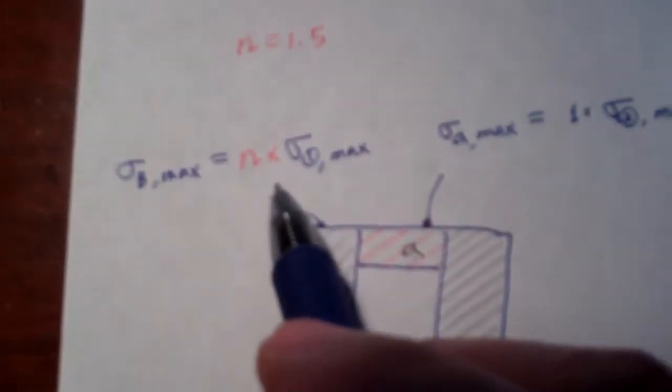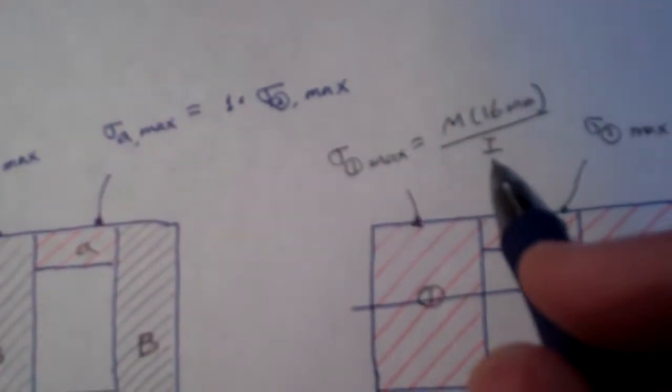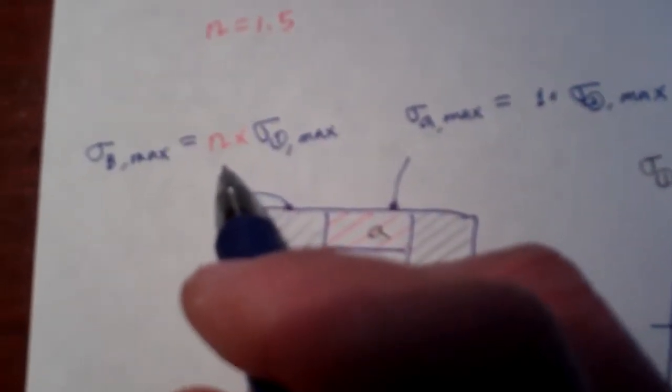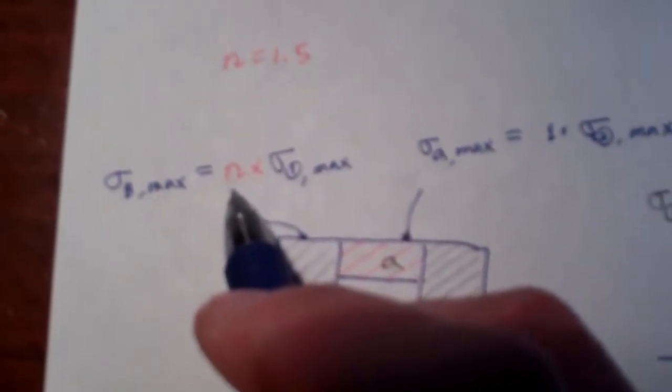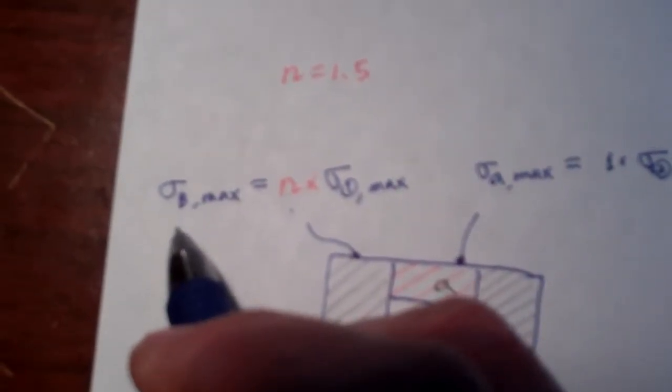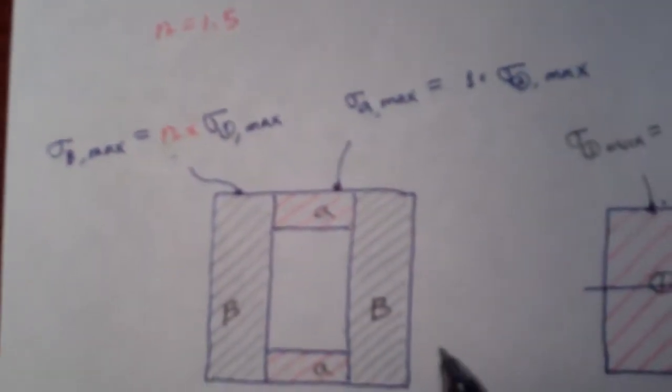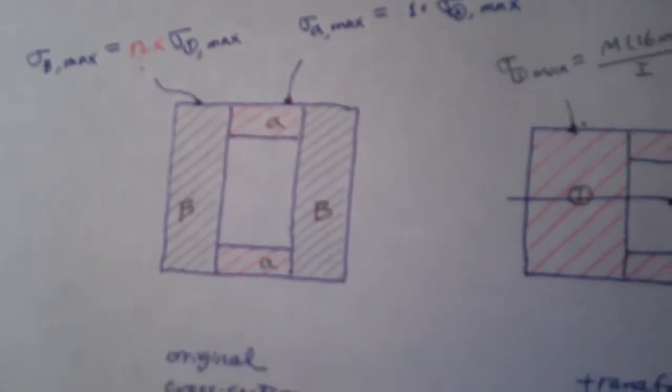And the transformation is this. For whatever we calculated on the transformed cross section, you must multiply with the scalar, which is 1.5, to get the value which represents the true values of the stress. And so using this transformation, we can proceed.